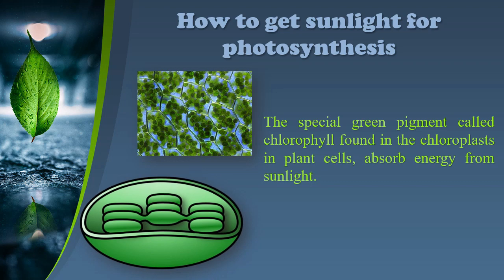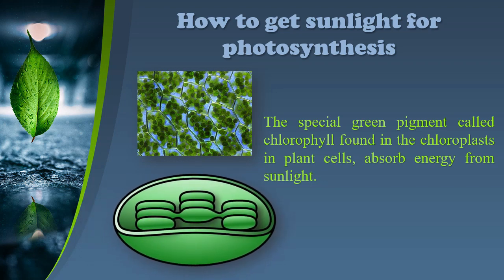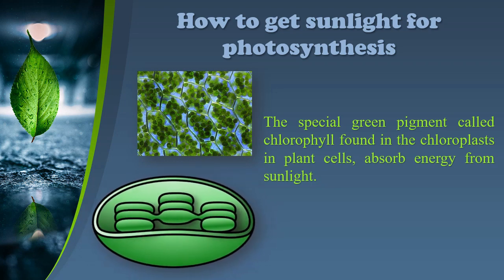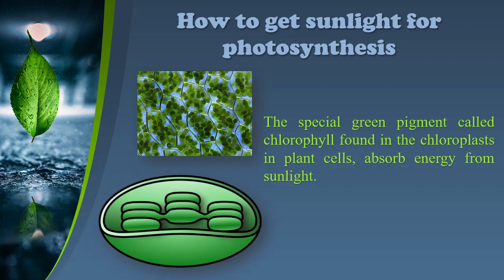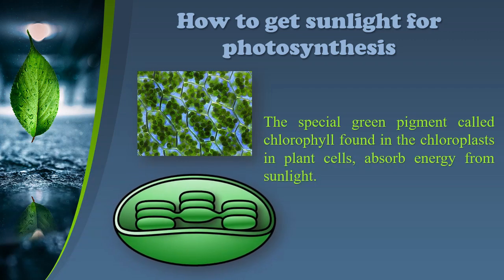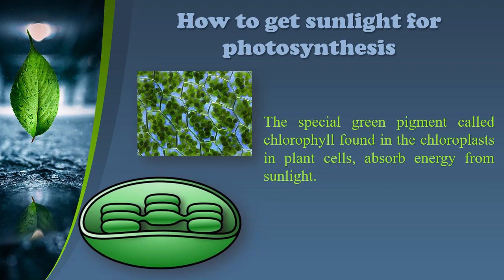How to get sunlight for photosynthesis. The special green pigment called chlorophyll, found in the chloroplasts in plant cells, absorbs energy from sunlight.